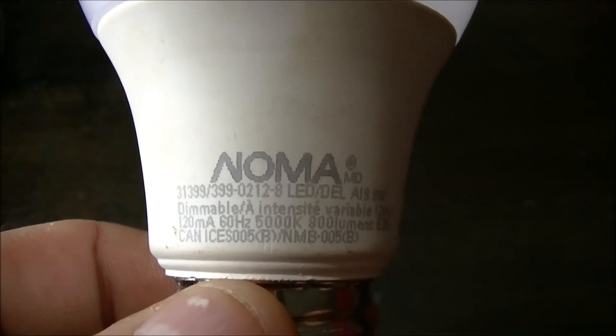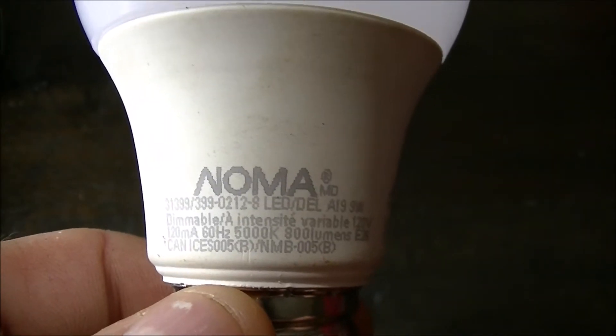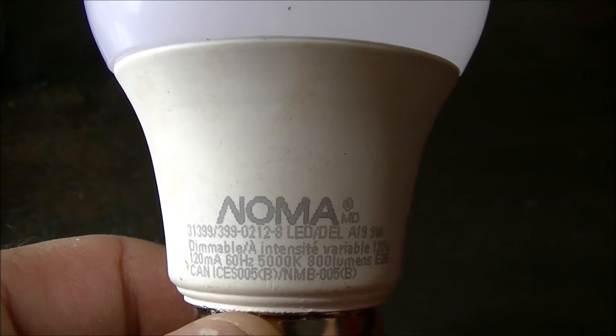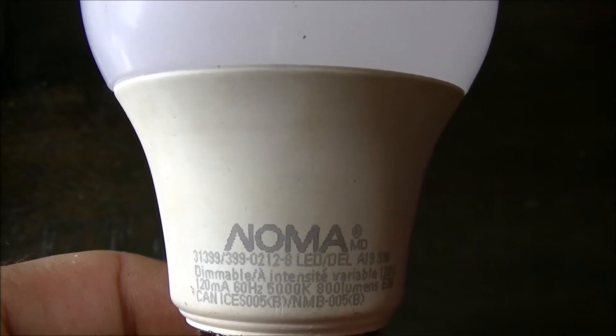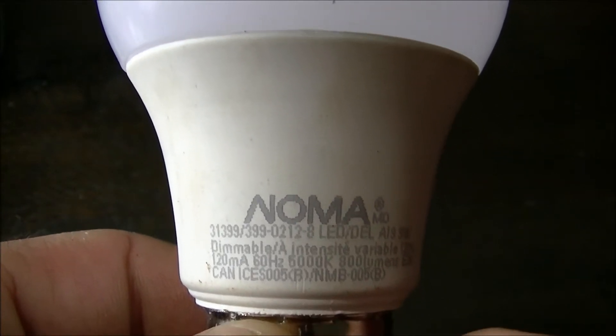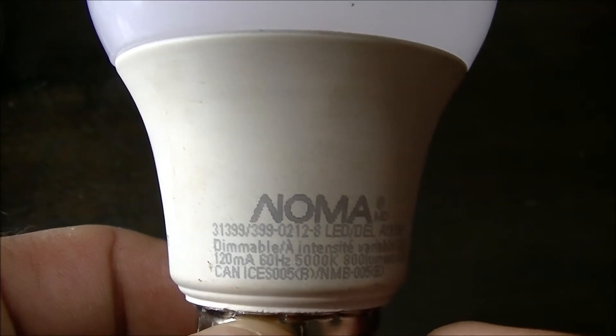Let's see why this bulb failed. My previous video spoke of bulbs that are flickering and blinking, non-dimmable when they're supposed to be dimmable, basically just not working properly and not giving out proper light.